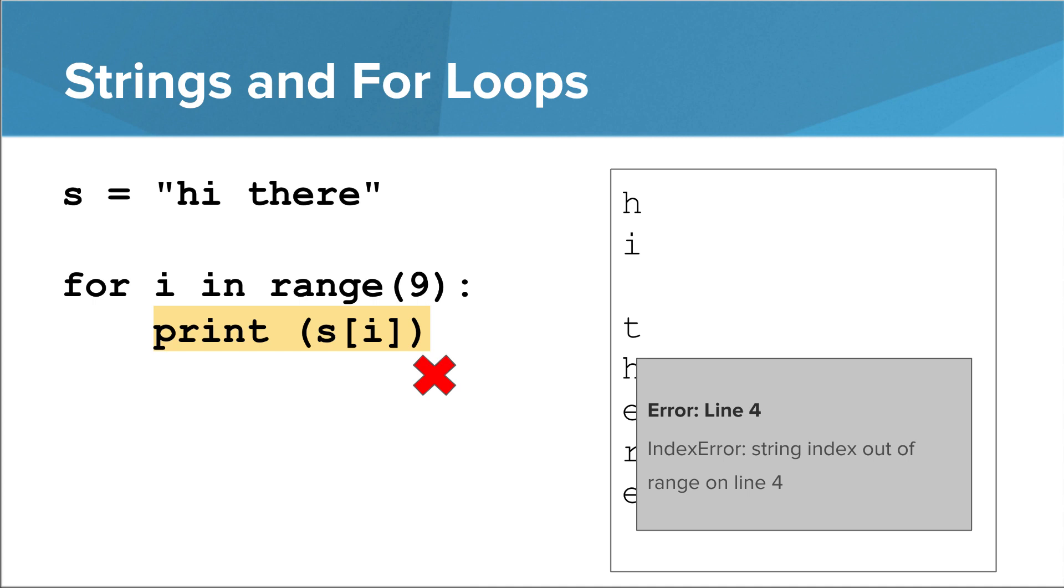Now let's say we decide the exclamation point was a bit too much and we want to get rid of it. We forgot to change the number in range, which means the last index, 8, will be too big.